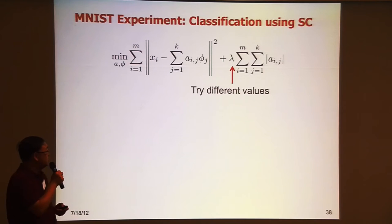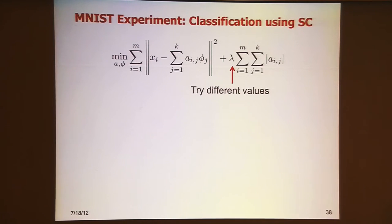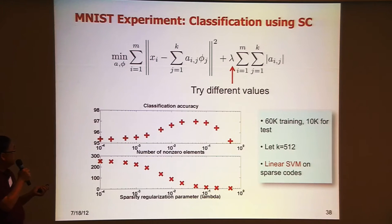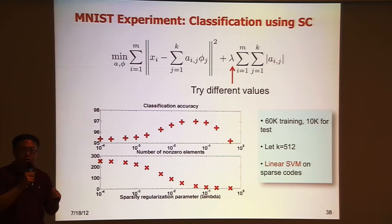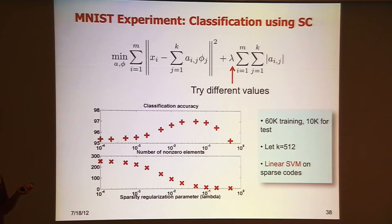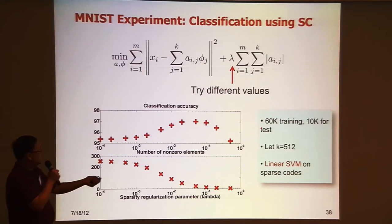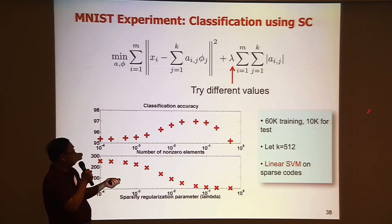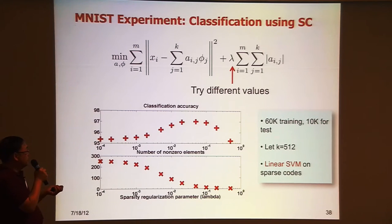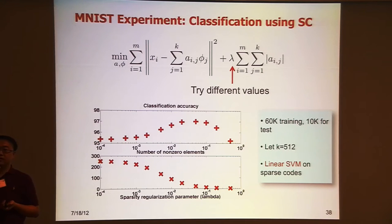We tried some experiments. We ran sparse coding on MNIST digit recognition benchmark — 60K digits for training and 10K for test. For each data point, we use sparse coding to get features and then apply a linear SVM to recognize. This is a 10-class classification problem. We try different regularization parameter values. When the regularization parameter is small, that means less sparsity. When it's large, you put a heavier sparsity constraint and the result is more sparse.